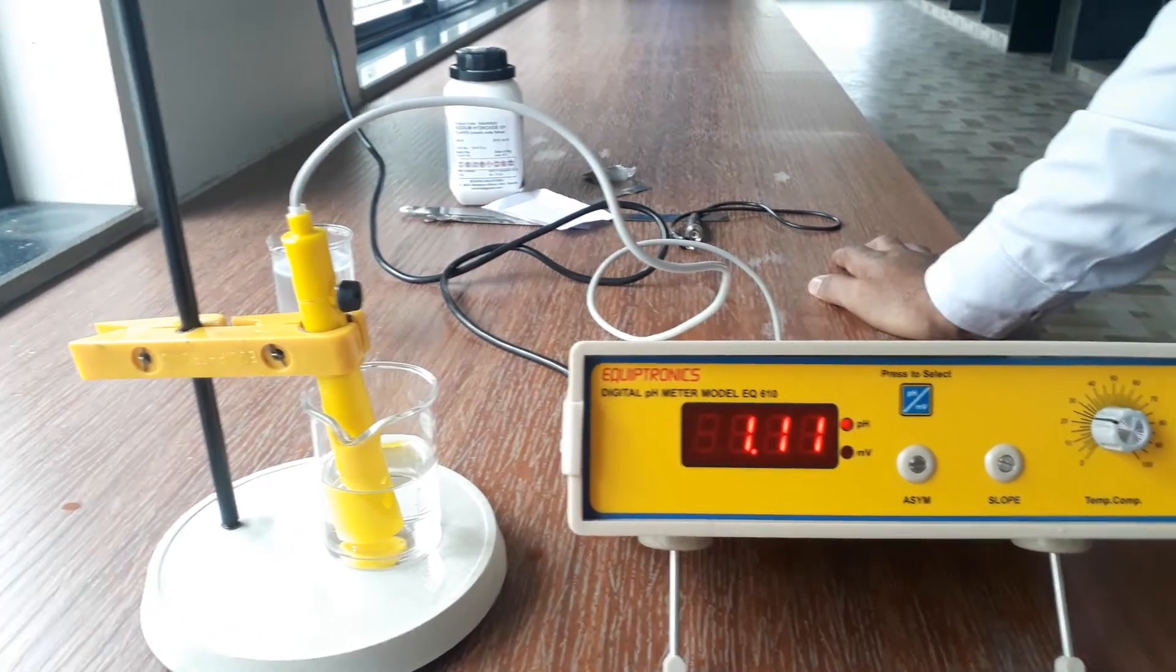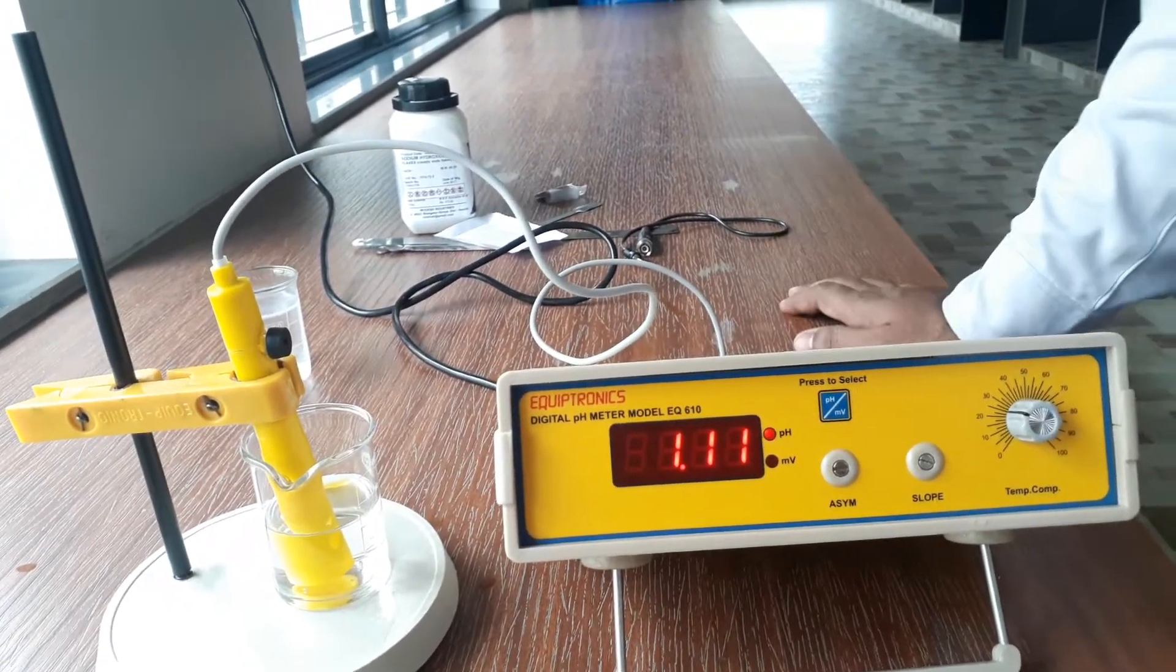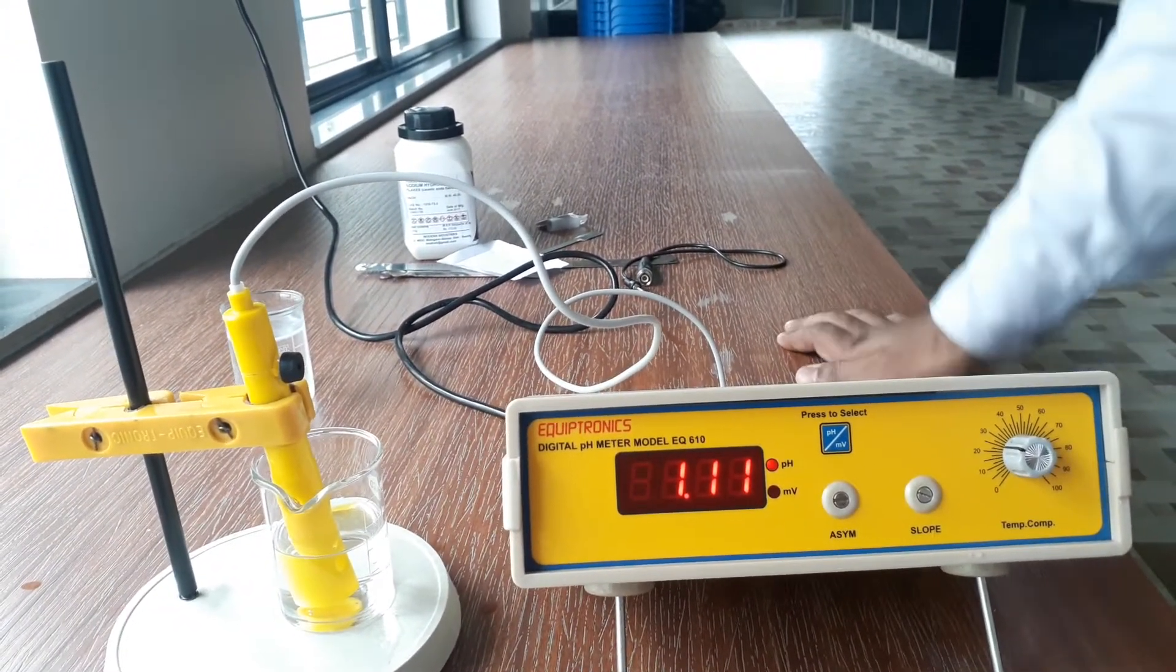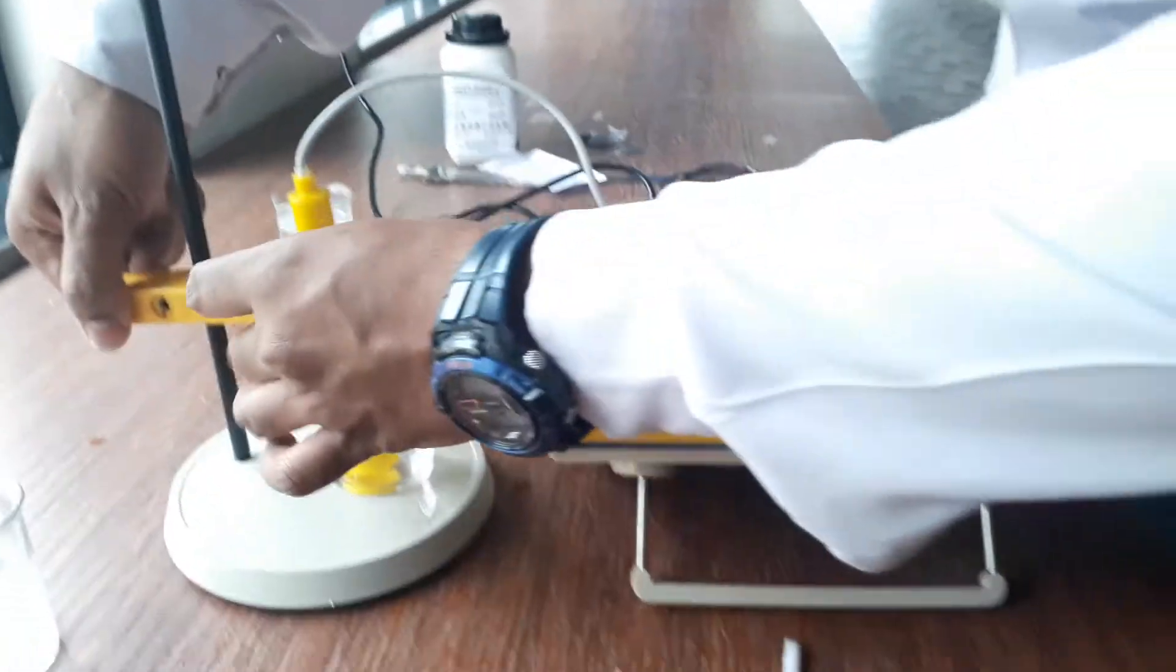Now we have noted: first we have noted the neutral solution that is water, second we have seen the pH value of acid that is hydrochloric acid. Now last solution we will take is NaOH, sodium hydroxide, which is one of the strongest base.